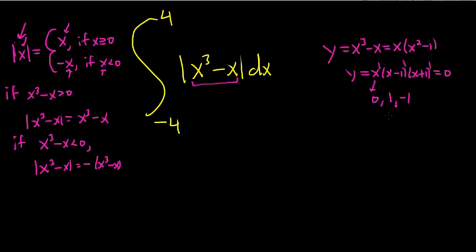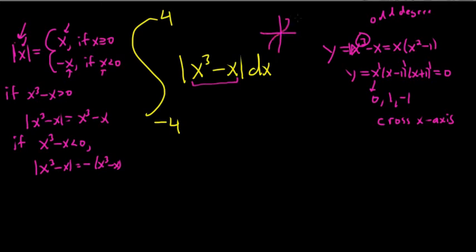The multiplicity is the exponent you see — these 1s — so that means they all cross the x-axis. If the multiplicity of a zero is odd, the graph crosses the x-axis there; if it's even, it touches and turns around. Also, this has an odd degree and a positive leading coefficient. So via the leading coefficient test, this function's end behavior is similar to x cubed: it falls left and rises right.